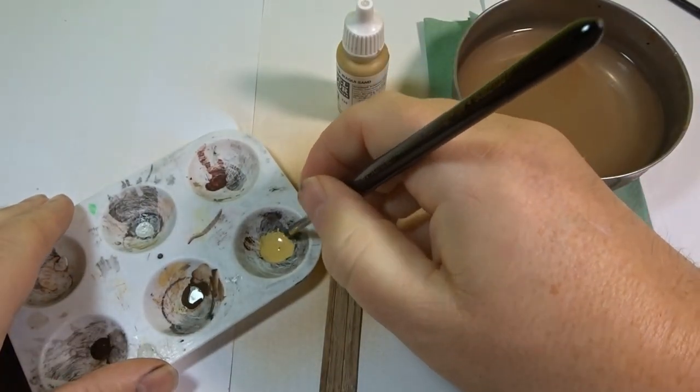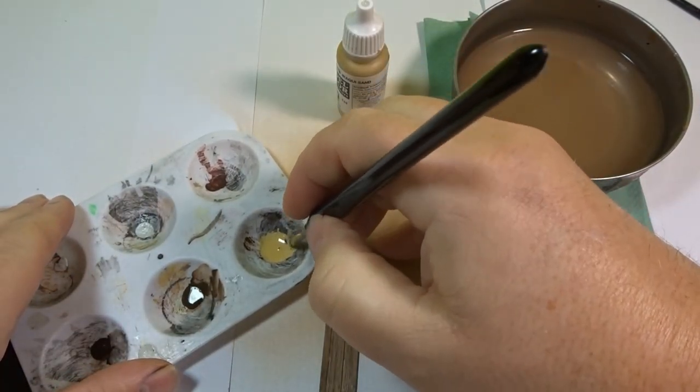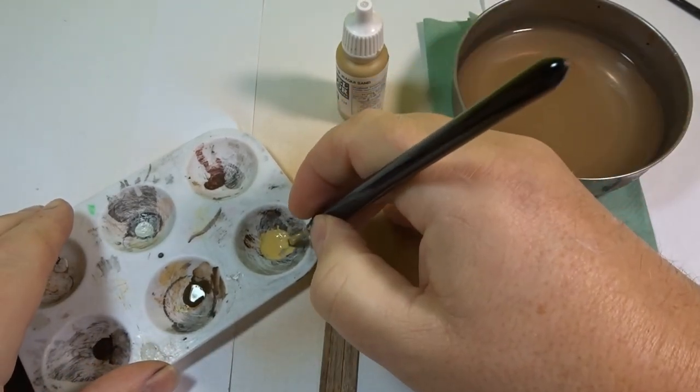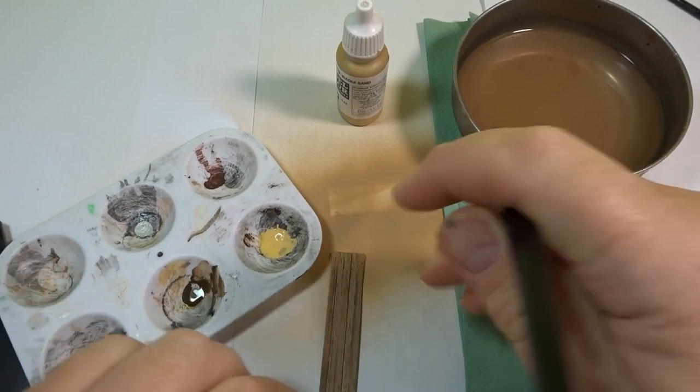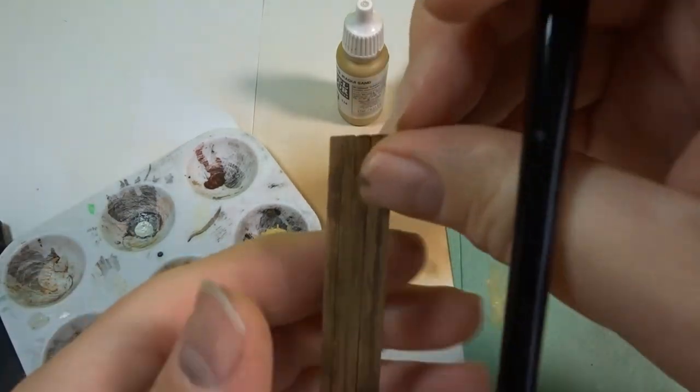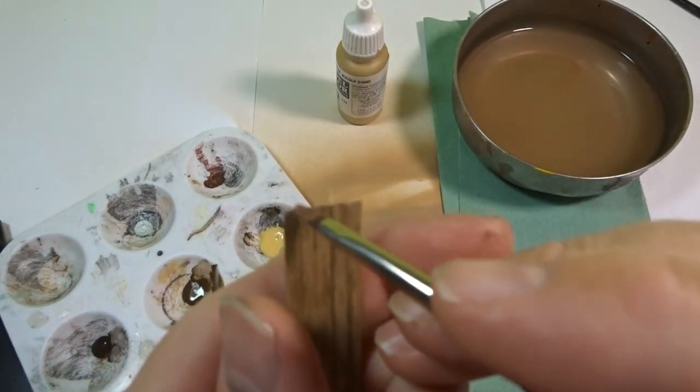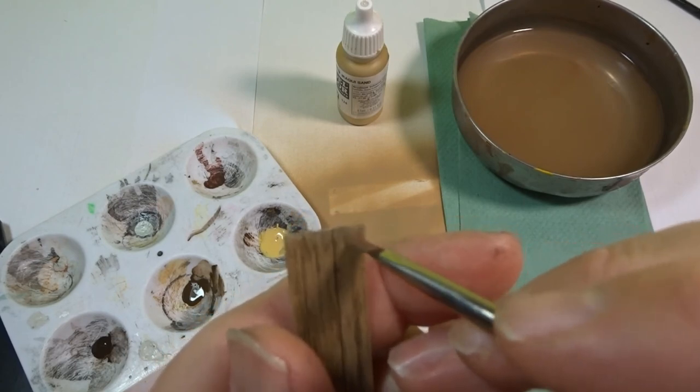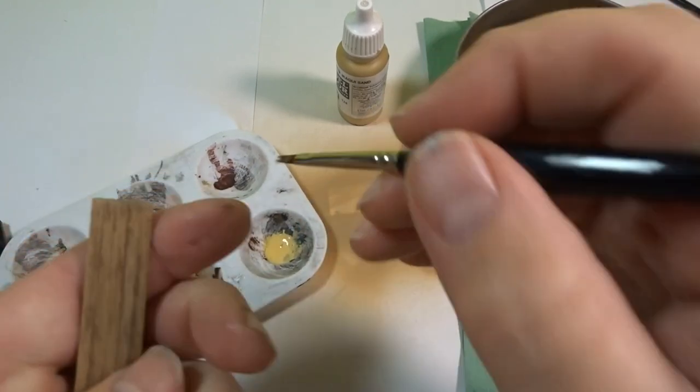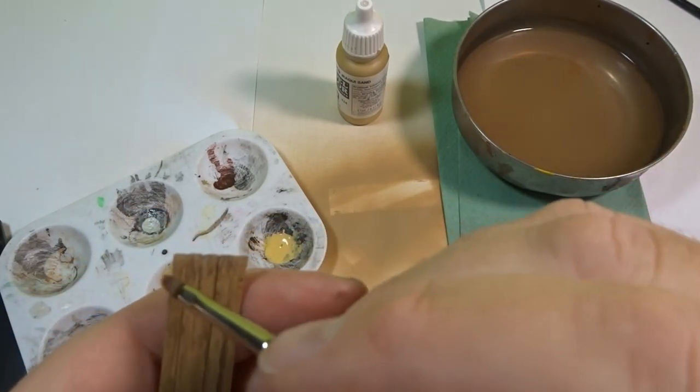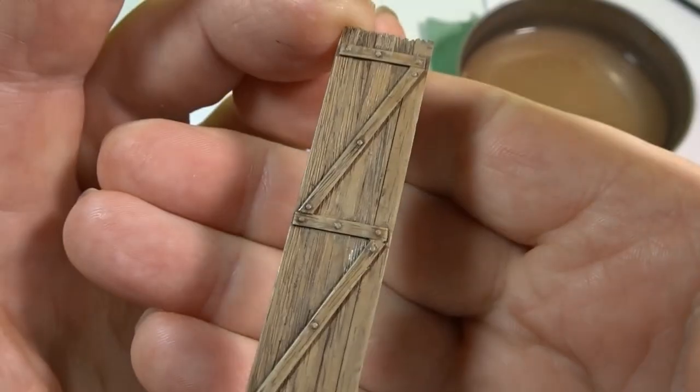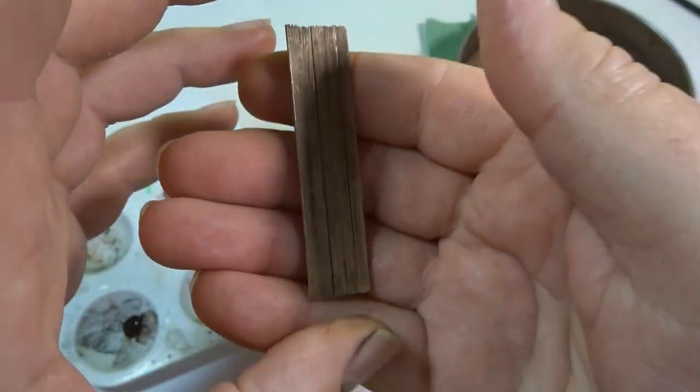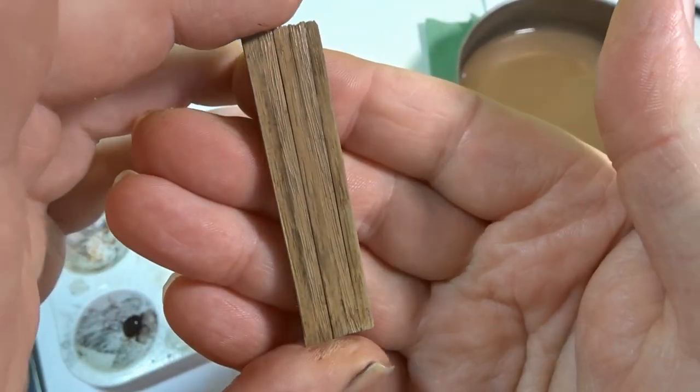Next we're going to do some Iraqi sand to create some highlights. Here what we want to do is a very much a dry brush effect. We'll run that along the edges and on the actual face of each of the planks as well. And there we go, that brings a lot more definition to the wood grain. That's coming along really well.